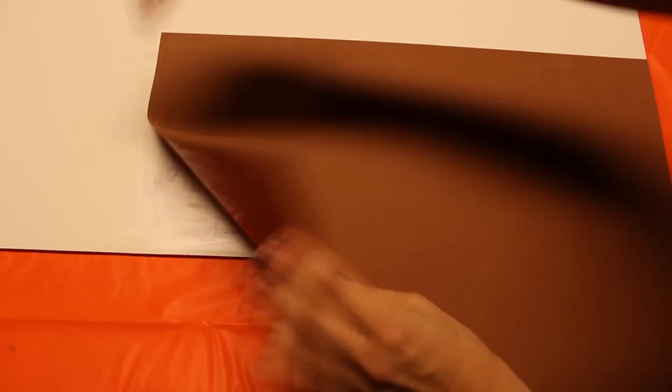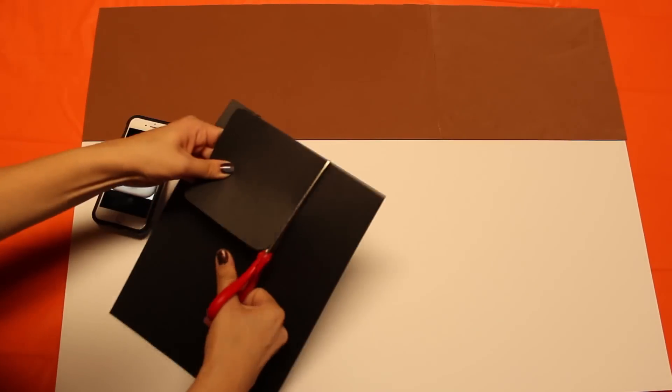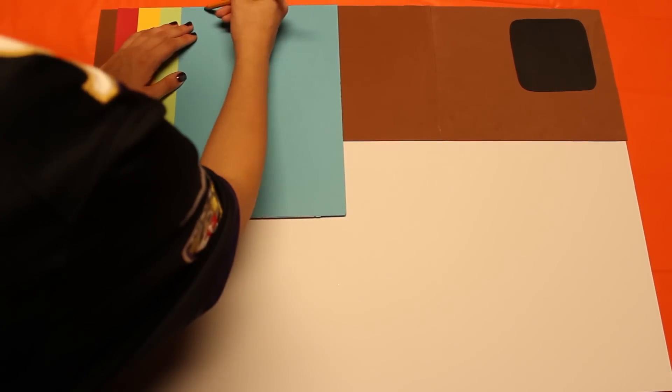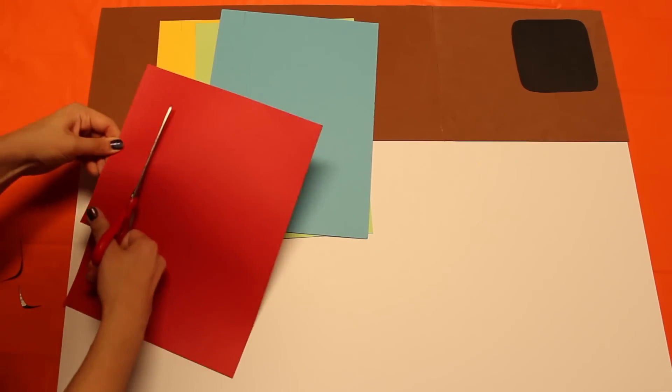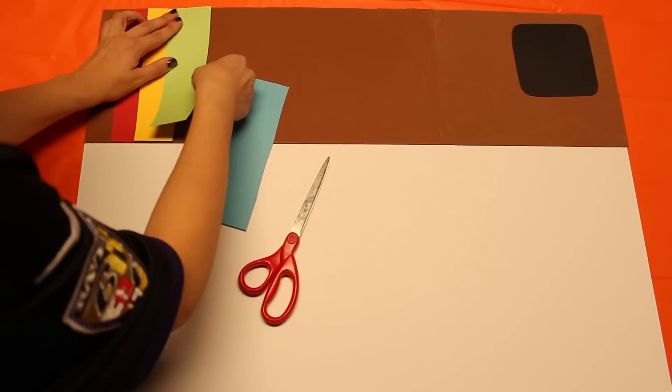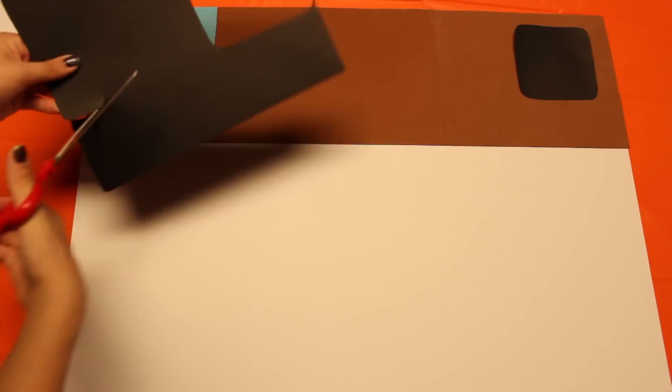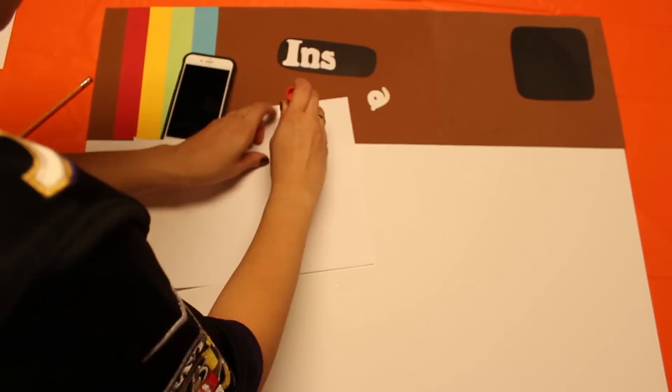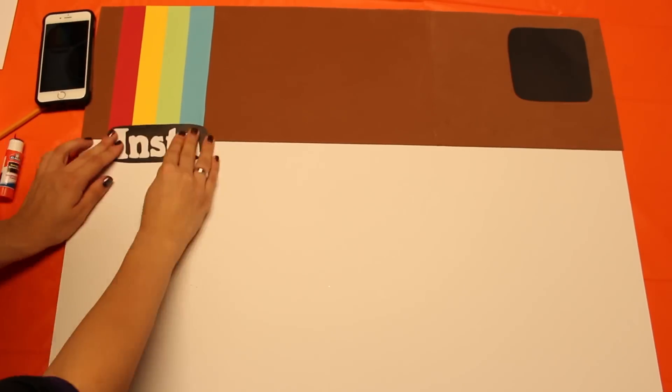You're just going to repeat the steps of gluing the brown on the white board. Cut off the excess brown. Next I'm just cutting out the black square that goes on the right top. And now I am measuring about one inch in width of each paper. And then I'm going to cut them out individually and then glue them on. Next I'm just writing the part where it says Insta. And so I'm just kind of free handing this and gluing it on the paper. And there you have it!